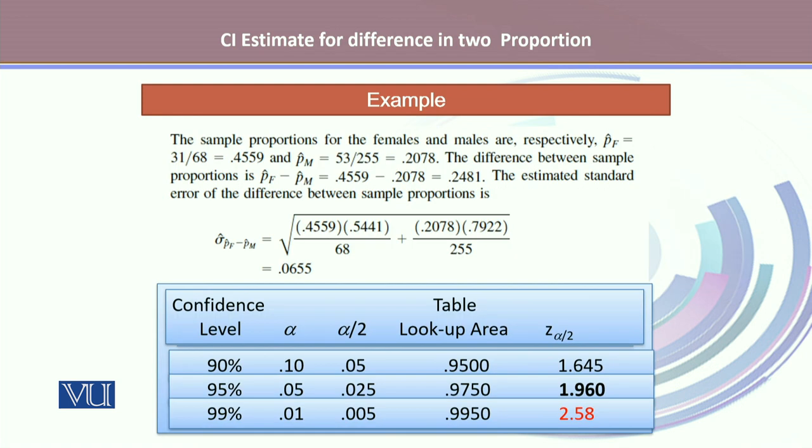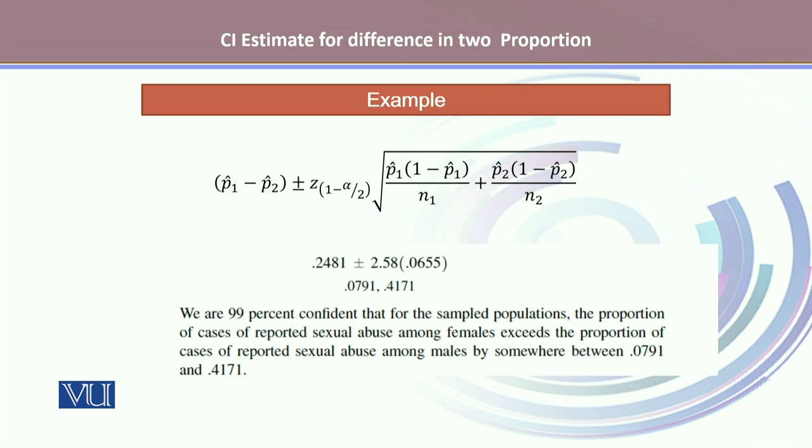The reliability factor can be obtained from the standard normal distribution. And here in this case, our interest is to obtain a 99% confidence interval. Hence we look at the confidence level of 99 and the area under the curve where it is 0.9950. The Z alpha by 2 value is 2.58. Using this reliability factor, difference in proportion, and the standard error of estimate for the difference in proportion, the confidence interval that we get is 0.0791 as a lower confidence limit and 0.4171 as upper confidence limit.